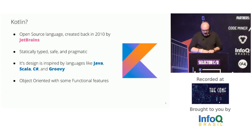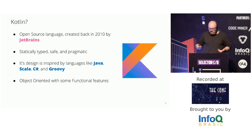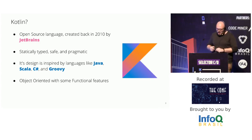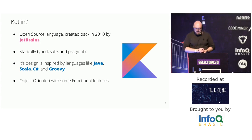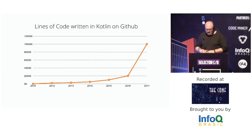Kotlin's design is inspired by languages like Java, C#, and Scala, so if you already know any C-like language — including Swift — you can quickly start with Kotlin. The language is object-oriented with some functional features like lambdas, streams, and higher-order functions. Kotlin also promotes immutability; for example, all classes are final by default, and you need to explicitly mark a class as open to extend it.